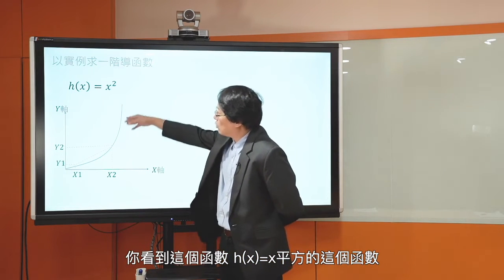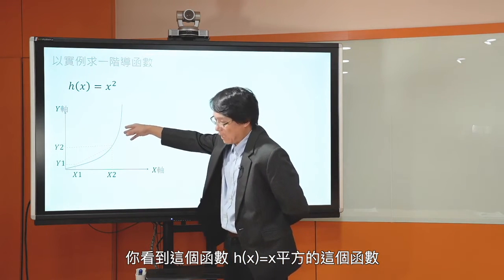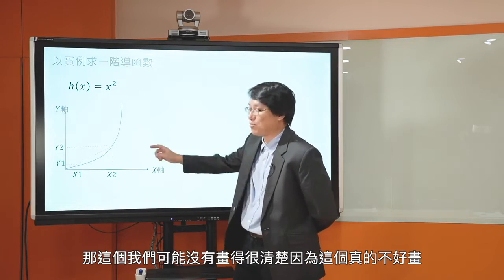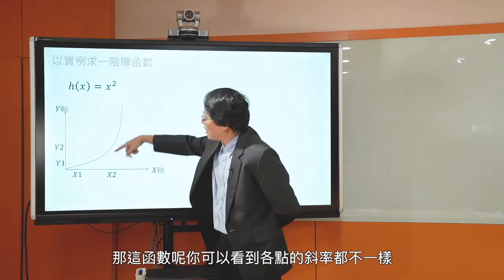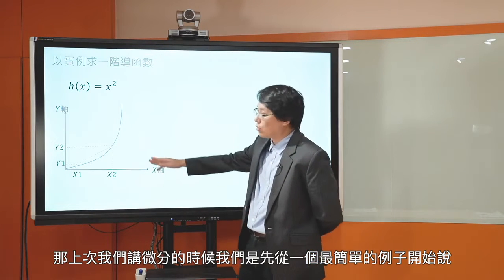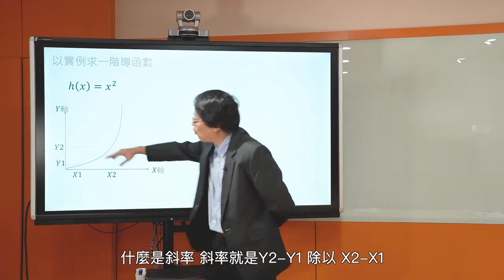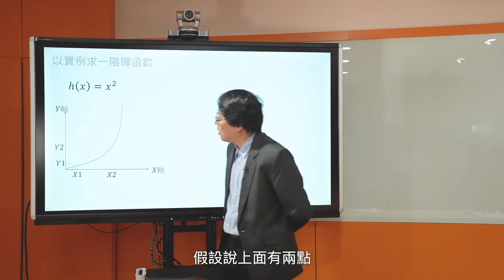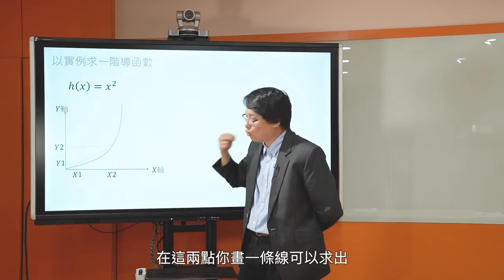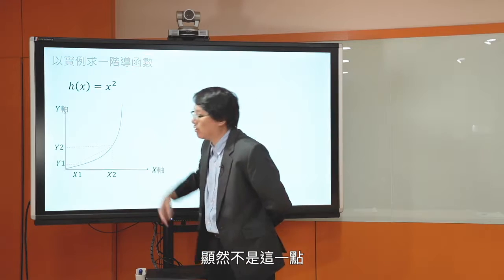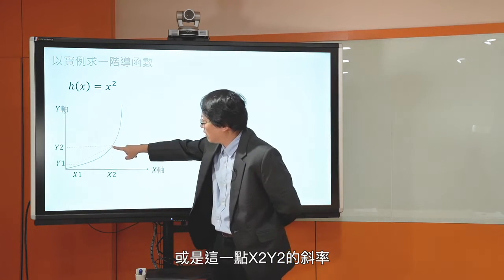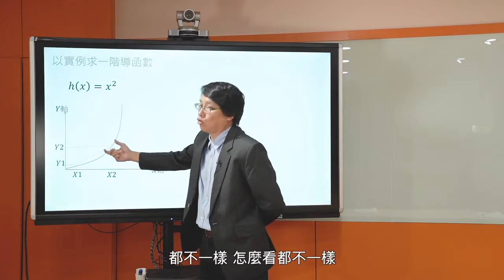我们来讲怎么样用这个函数求出各点上面斜率的公式，也就是求一阶导函数。你看到H of X等于X平方这个函数，各点的斜率都不一样。我们先从最简单的例子开始，斜率就是Y2减Y1除以X2减X1。假设上面有两点，你画一条线可以求出这条线的斜率，可是这条线的斜率显然不是X1 Y1或X2 Y2那一点的斜率。